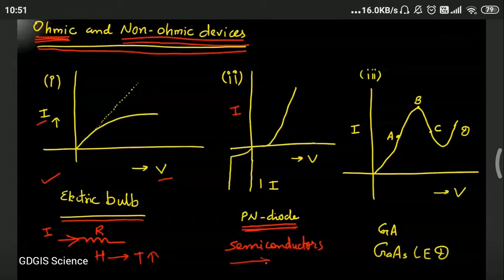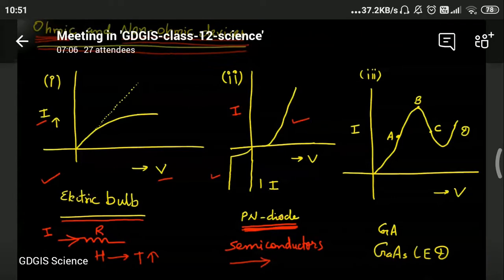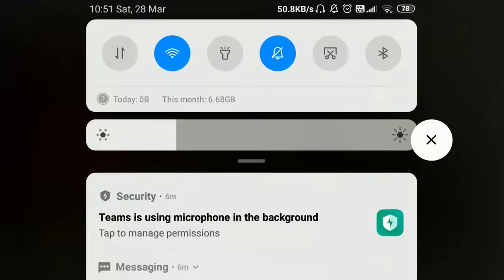And see carefully, students: PN diode is a semiconductor device which allows electric current to pass through only in one direction, means maximum amount of current will pass from P to N. So its graph is in the first as well as in third quadrant, and you can easily see that here I is not proportional to V. So it's a non-ohmic device.